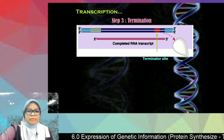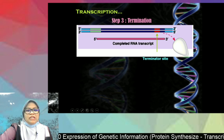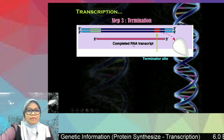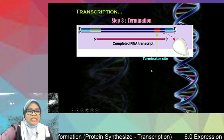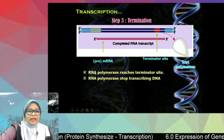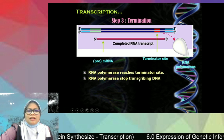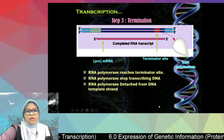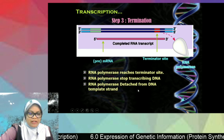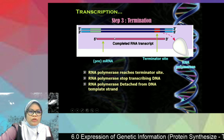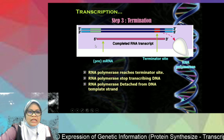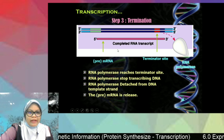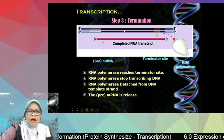When RNA polymerase reaches the terminator, termination begins. RNA polymerase stops transcribing the DNA and detaches from the DNA template strand. The product released is RNA, which we call pre-mRNA.